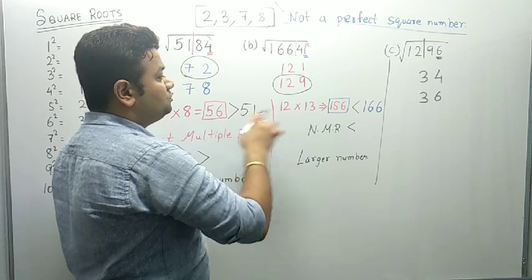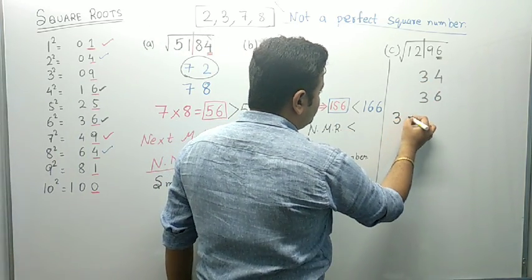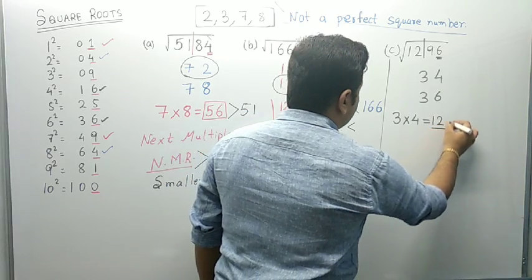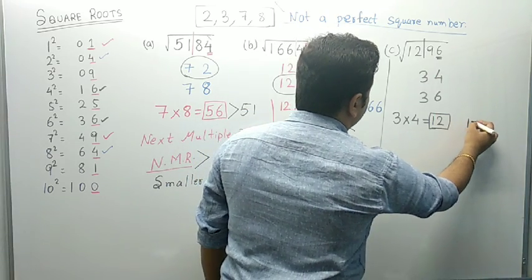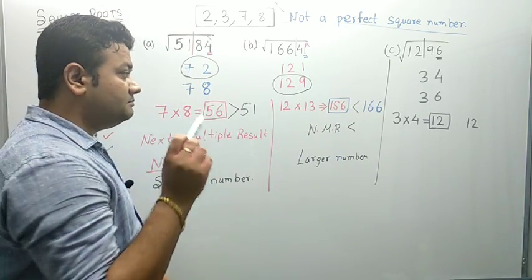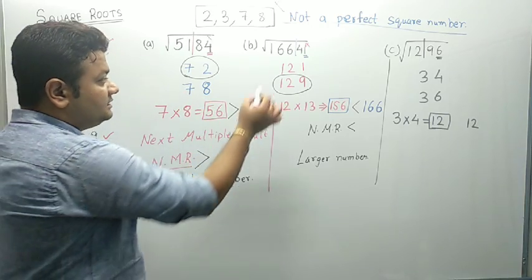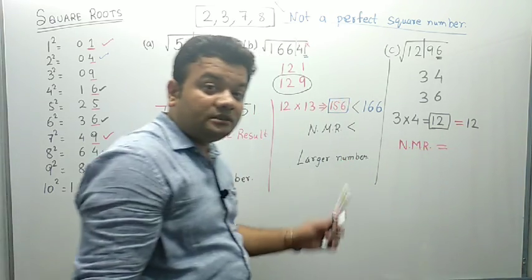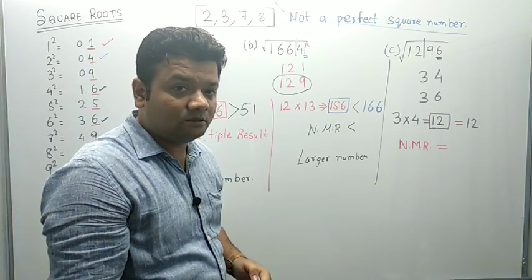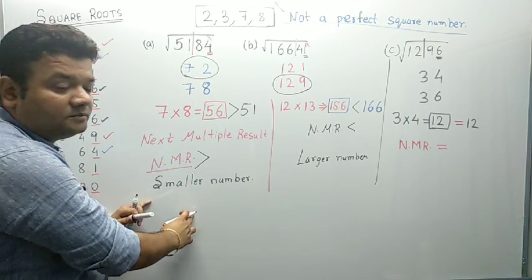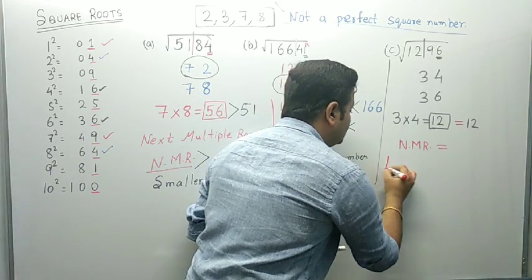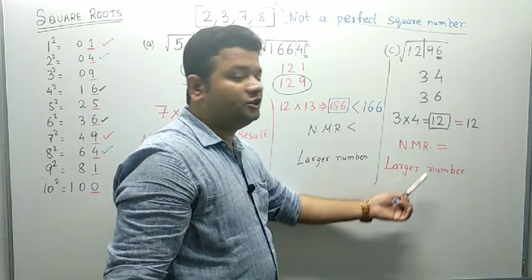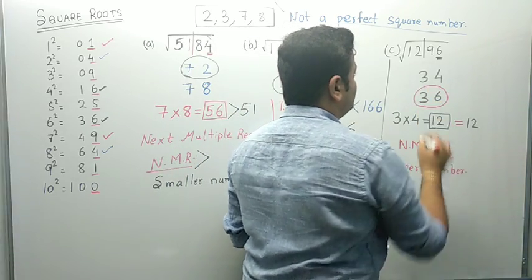Now we need to find the NMR. What is common? 3 is common. 3 multiplied by the next number after 3, which is 4. Three into four gives us 12. So 12 is our Next Multiple Result. Compare it with the remaining number, which is also 12. Now this was the reason I wrote 3 examples: in the first example NMR was greater; in the second NMR was less; and in this case NMR is equal. When NMR is greater, the answer is the smaller number. When NMR is smaller or equal, the answer is the larger number. So 36 is the required square root of 1296.